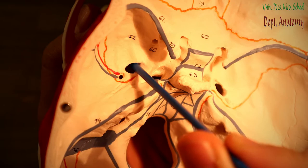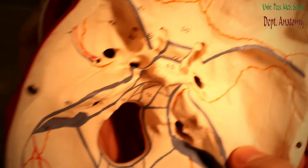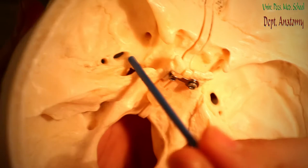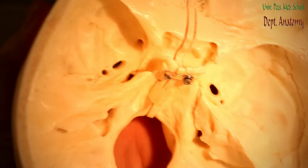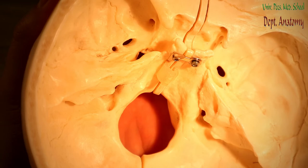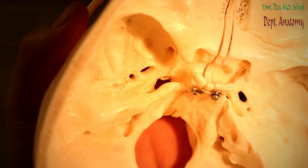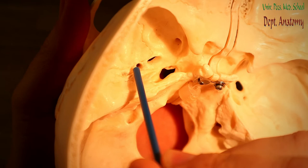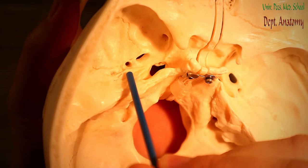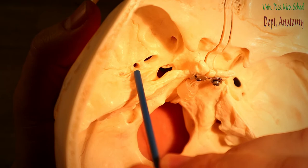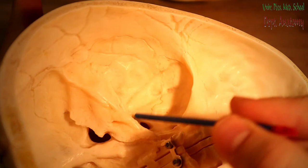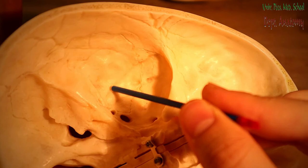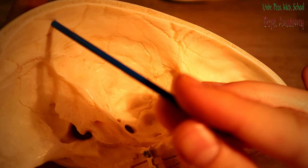This hole is called the foramen ovale. In the foramen ovale you find the mandibular nerve, the third branch of the trigeminal, which contains both somatosensory and somatomotor nerve fibers. Laterally from the foramen ovale is the foramen spinosum, which contains the middle meningeal artery — the main supply of the dura mater. After it enters the middle cranial fossa it goes upward and forms impressions called arterial grooves. The middle meningeal artery is located in the epidural space.